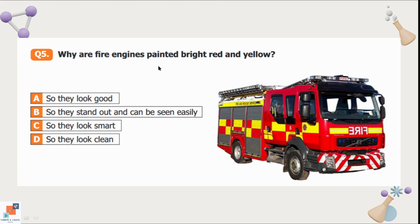Question number 5: Why are fire engines painted bright red and yellow? Option A is they look good. Option B is they stand out and can be seen easily. Option C is they look smart. And the last option is so they look clean. Whenever fire is broken at some place, it destroys everything so quickly. That's why fire engines are colored in bright colors so everybody can see them and they easily reach at the destination without getting stuck into the traffic. So option B is the correct option. They stand out and can be seen easily.